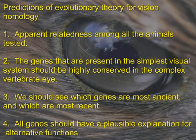If the modern theory of evolution is true, I would expect to see relatedness among all the animals tested. I would also expect to see that genes present in the simplest visual system would be highly conserved in the complex vertebrate eye.